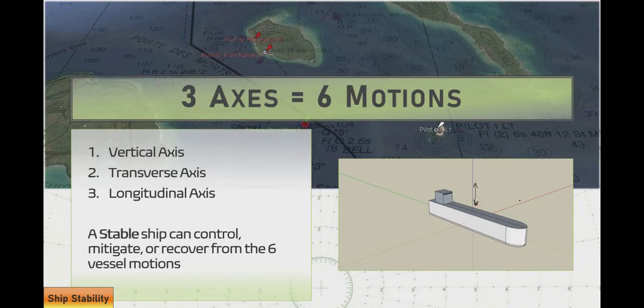We have the transverse axis and the longitudinal axis. In order for a ship to be considered stable, it has to be able to respond, mitigate, control, or return to equilibrium. We want upright equilibrium, like you see in the picture. The ship needs to be able to respond to the six different ways that it can move along these three axes.